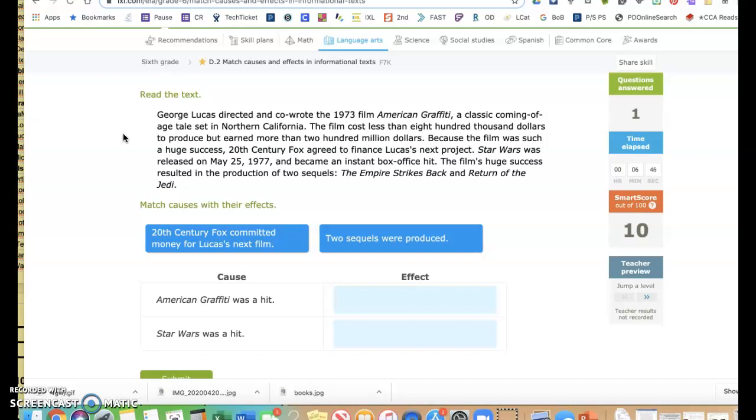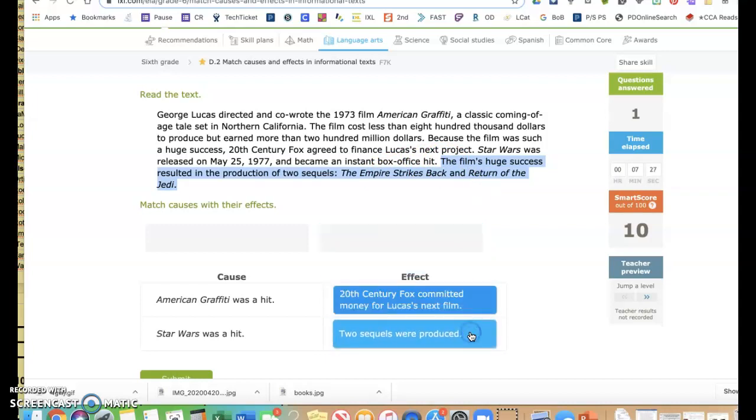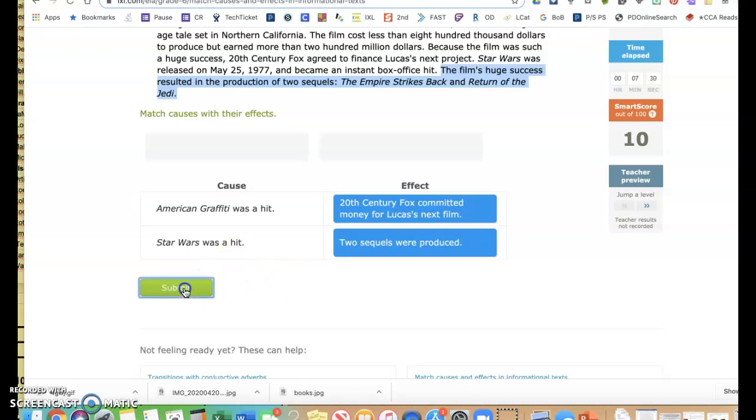The film's huge success resulted in the production of two sequels, The Empire Strikes Back and Return of the Jedi. So because American Graffiti was a hit, because the film was such a huge success, 20th Century Fox agreed to finance Lucas' next project, which was Star Wars. So right here, 20th Century Fox committed money for Lucas' next film. Star Wars was a hit. The film's huge success resulted in the production of two sequels. So I put that right there. That makes sense. There we go.